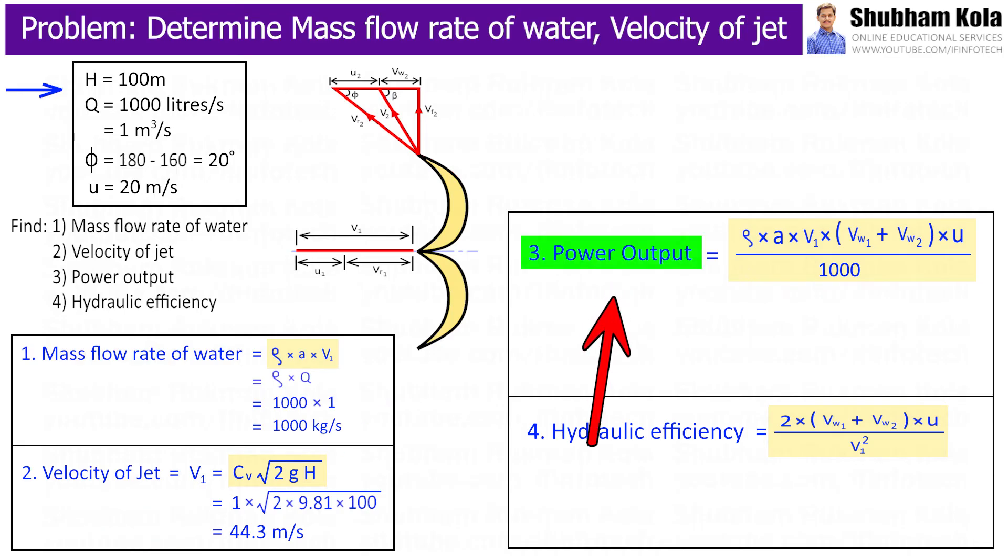Next, we want to determine power output of turbine. So to calculate power, we want to find out values of velocities of wheel at inlet and outlet, that is VW1 and VW2. We need to find out first.